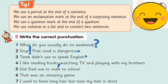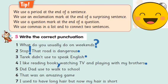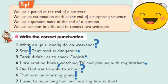Number four: 'I like reading books, watching TV, and playing with my brothers.' - comma, because we use a comma in a list. Number five: 'Did dad use to walk to school?' - question mark. Number six: 'That was an amazing game!' - exclamation mark. Number seven: 'I used to have long hair, but now my hair is short.' - period at the end. This is the end of our lesson today. I hope you've learned a lot. See you insha'Allah in the next video, bye!